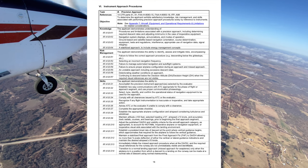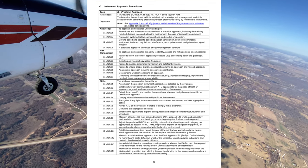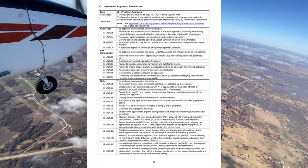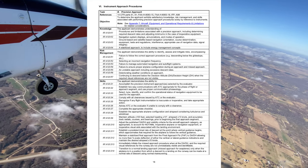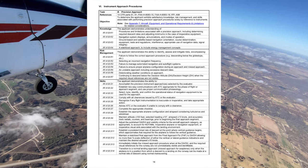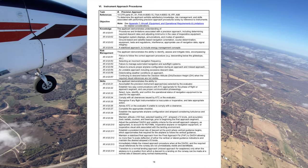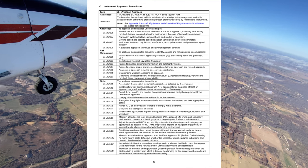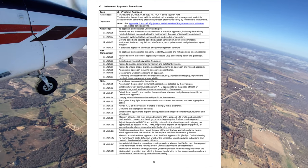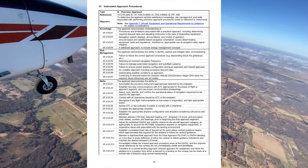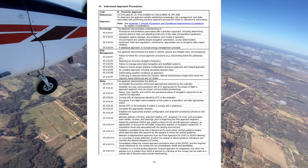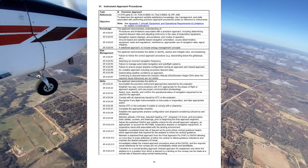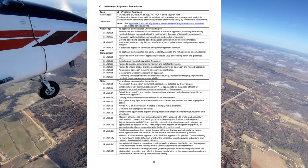There are several types of approach lighting systems. The ALS — approach lighting system — helps transition from instrument to visual flight and can help estimate flight visibility if you know the dimensions of the ALS configuration. The approach lighting system starts 2,400 to 3,000 feet from the runway. Types include SALSF (simplified short approach lighting system with runway alignment indicator lights), ALSF (approach lighting system with flashing lights), and MALSR (medium intensity approach lighting system with runway alignment indicator lights).